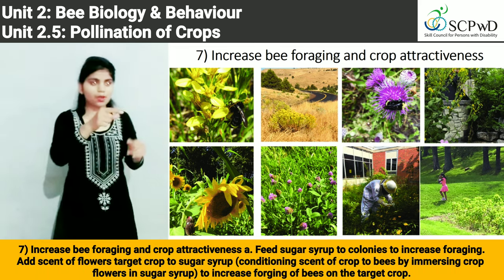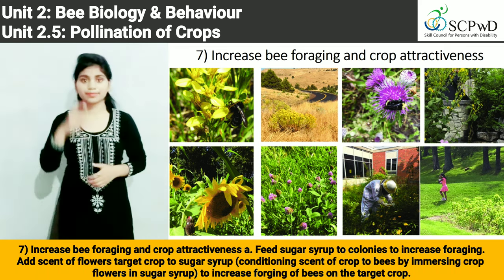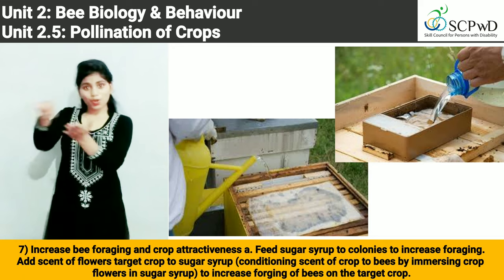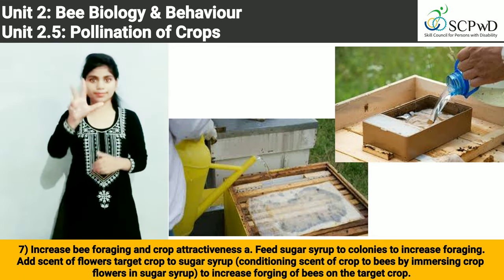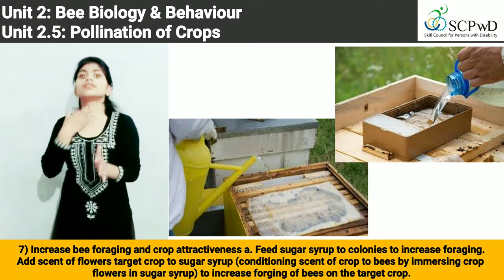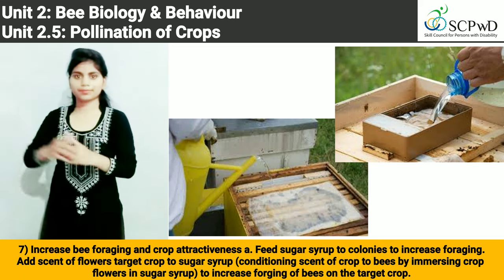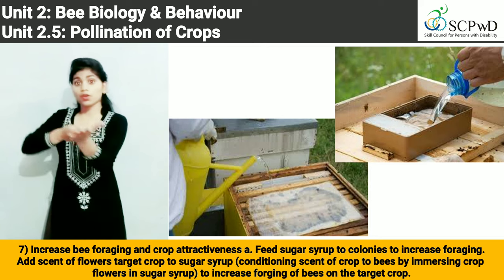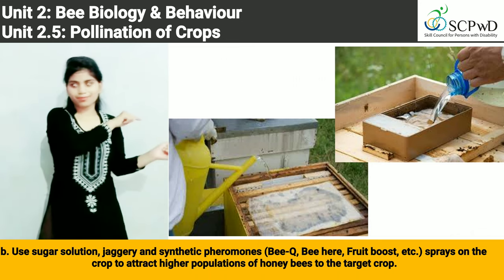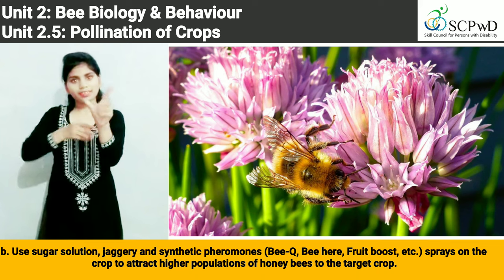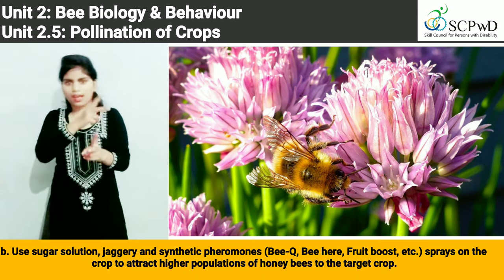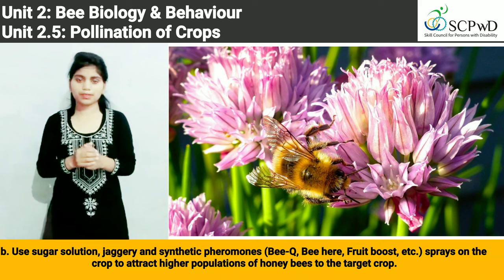Number 7: Increase bee foraging and crop attractiveness. A. Add the scent of the target crop's flowers to sugar syrup. Condition the scent of the crop to bees by immersing crop flowers in sugar syrup to increase foraging of bees on the target crop. B. Use sugar solution, jaggery, and synthetic pheromone sprays on the crop to attract higher populations of honey bees to the target crop.